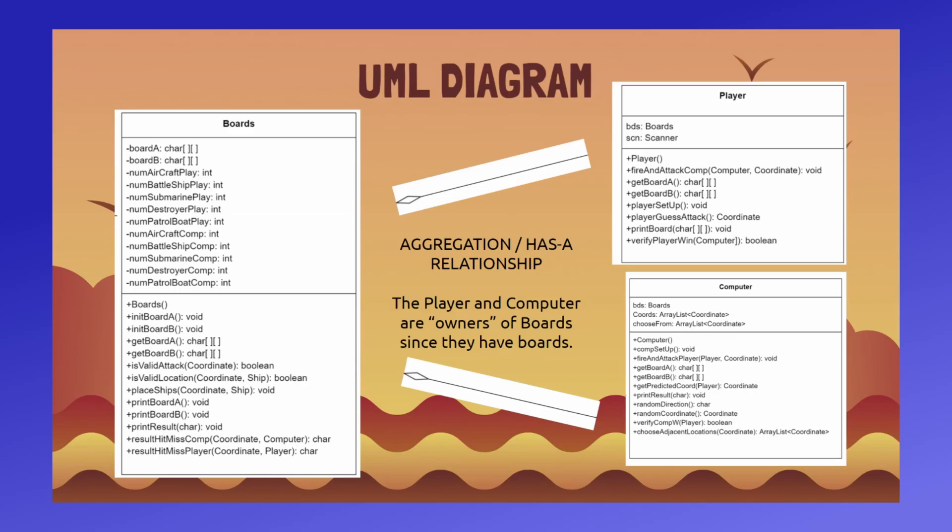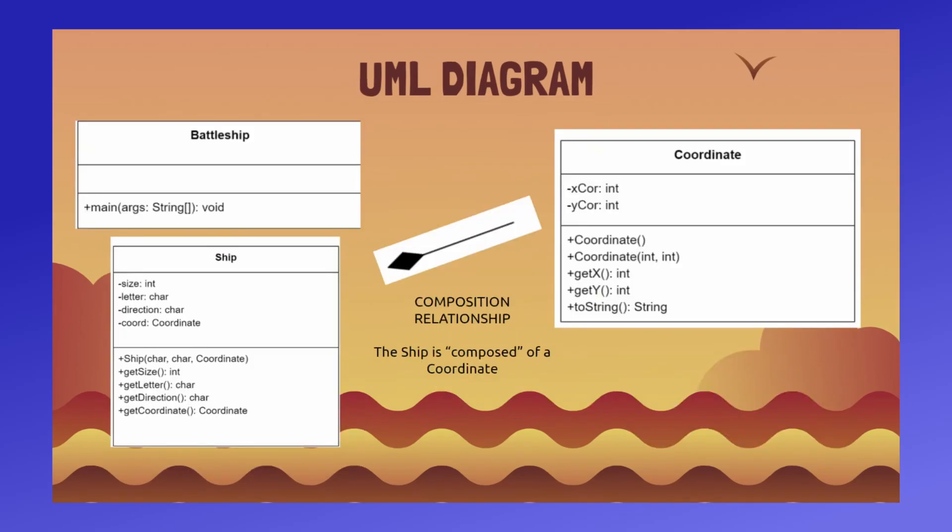It is also important to note that these classes have an aggregation or has-a relationship, and this is because the player and the computer are owners of the board since they have boards as their instance data. Going back to the Battleship class on the top left, this essentially facilitates the game between the player and the computer.